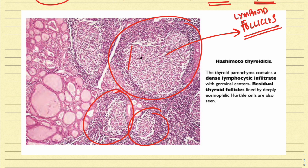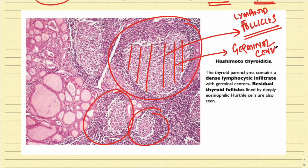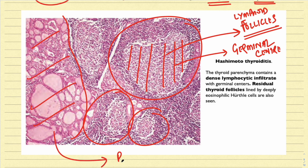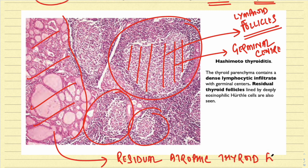Can you appreciate an area which is a little bit lighter? This is the germinal center. These lymphocytes inside are actively proliferating in the germinal center. Very important — you can see this is the residual atrophic thyroid follicles.